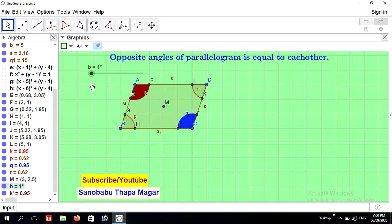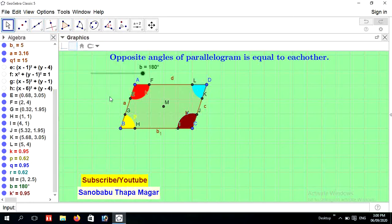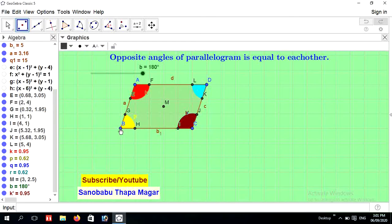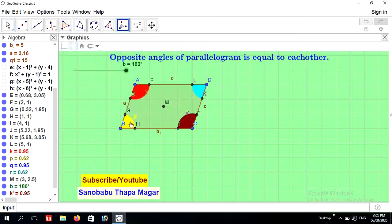You can see here angle A is accurately fit with angle C. It's proved angle A and C are equal to each other. Again, recolor the angle B and D. And find the midpoint of B and D. For that go to point tool and press midpoint or center and press these two points. Here is point N. Now go to reflect tool and press rotate around point.